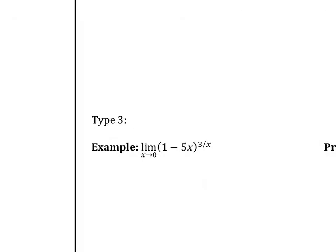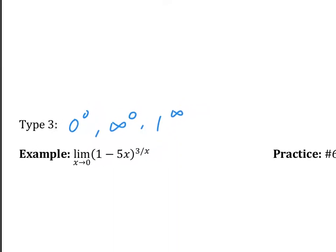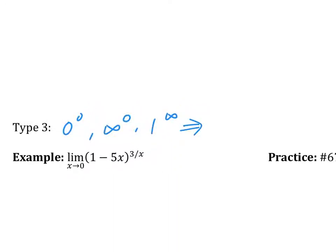Type 3 is something to a power — like zero to a zero, or infinity to zero, or one to the infinity. That's why you couldn't do the homework. No matter what happens, if you want to apply L'Hôpital's rule, the only time it applies is if you have zero over zero or infinity over infinity. Anytime you see a power with a variable in it, think log — because we're going to have to get that variable down using log.